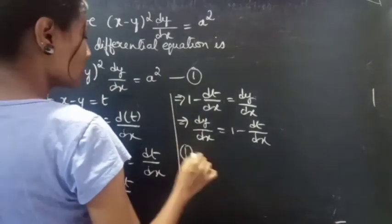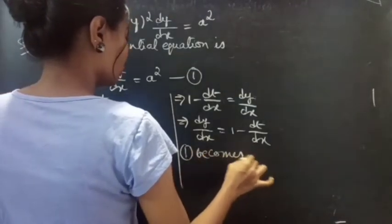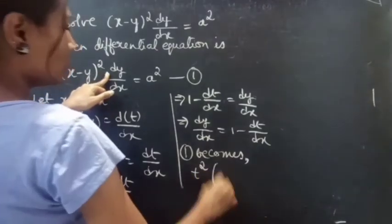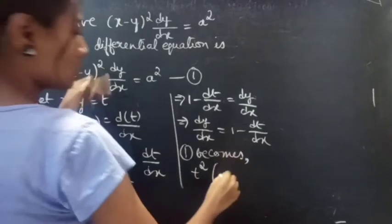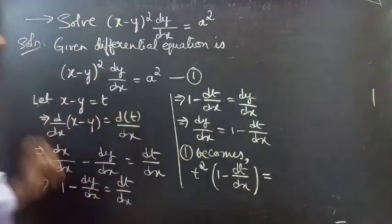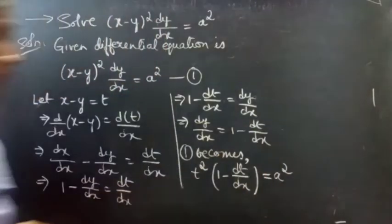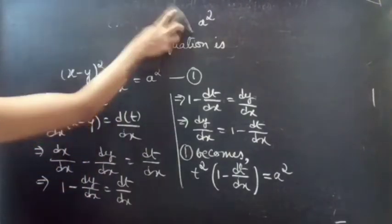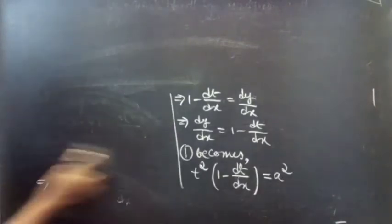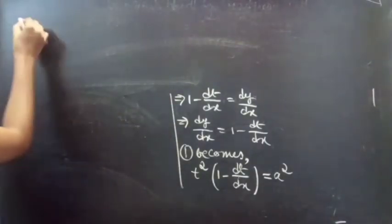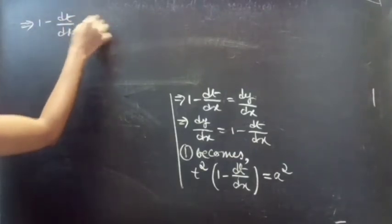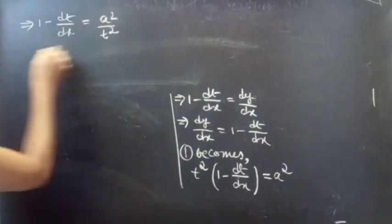So you can replace dy/dx by 1 minus dt/dx and replace x minus y by t. So we get t squared into (1 minus dt/dx) equals to a square, which you can write as 1 minus dt/dx equals to a square by t square.